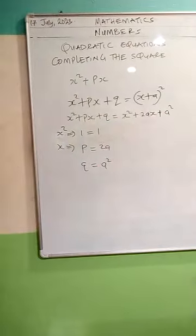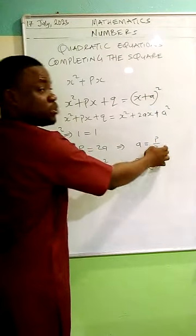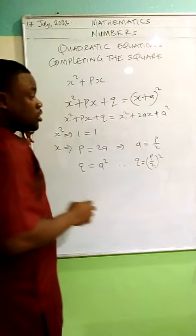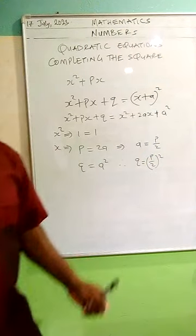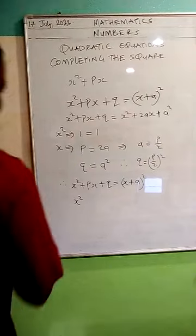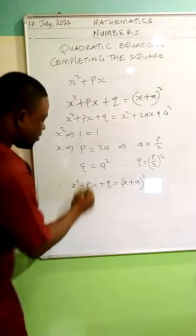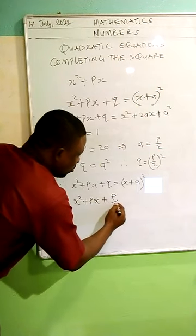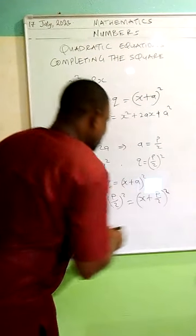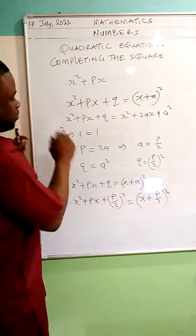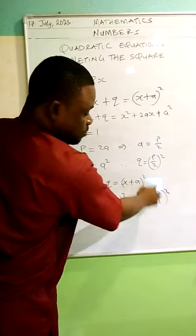Now let's see the relationship between them. If p equals 2a, then making a the subject gives a equals p over 2. And if I substitute p over 2 for a in q equals a squared, I get q equals p over 2, all squared. So what I'm adding to the original expression x squared plus px is p over 2 all squared, and what I get on the other side becomes x plus p over 2, all squared.